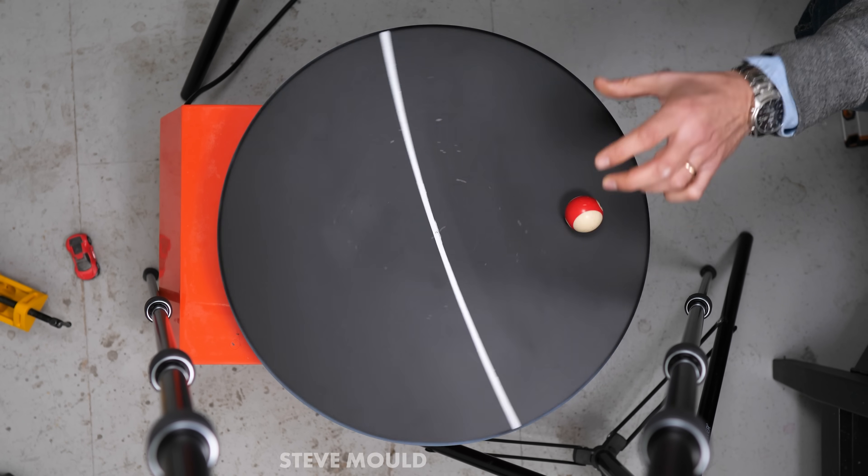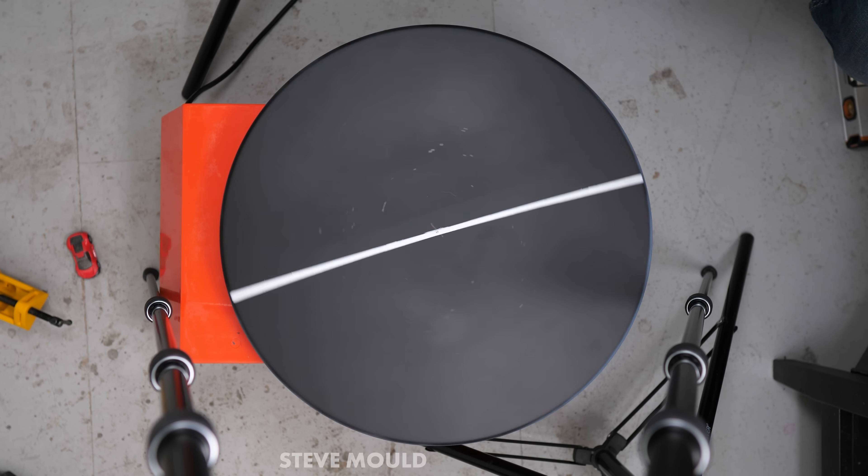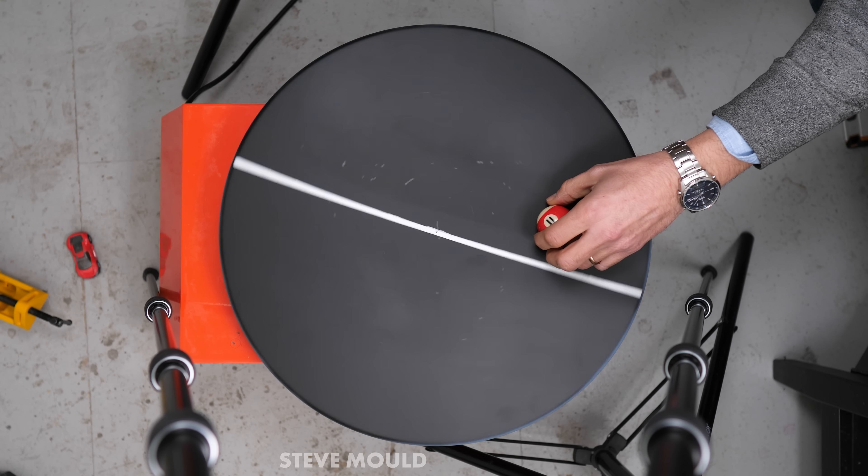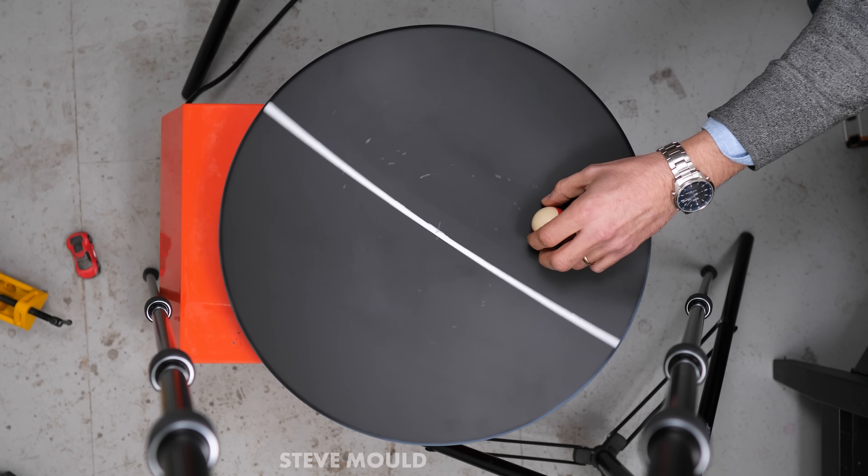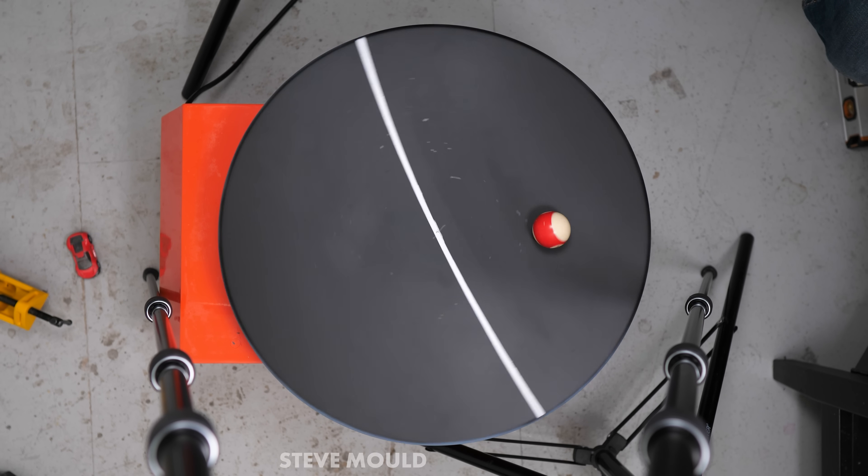What about if we start the ball off center? Well, if we simply drop the ball onto the turntable, then it flies off. But what if I hold the ball in position so it gets up to speed and then let go? By the way, this is a child-sized pool ball as opposed to a giant hand. Look, when I let go, the ball just sits there.